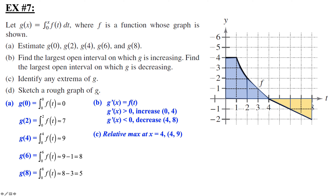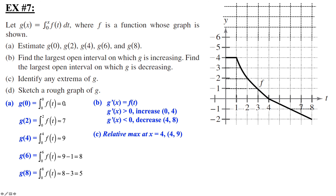Sketch a rough graph of g. We have g of 0 at 0, g of 2 at 7, g of 4 at 9, g of 6 at 8, g of 8 at 5. Plotting these points and drawing our curve, that's what our g function is roughly going to look like. We only have 5 points, so that's the best we can do. And that's the end of this section.